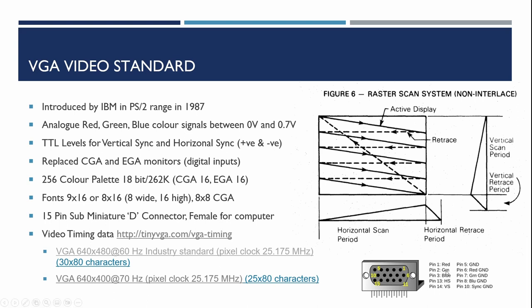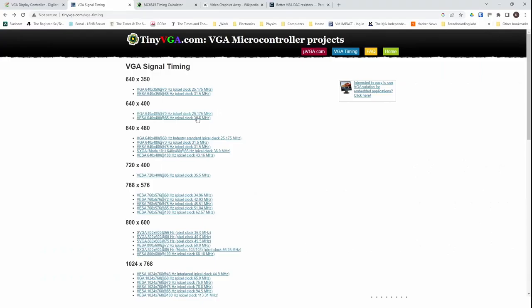The main signals we're concerned with are red, green, blue, horizontal sync, and vertical sync, plus quite a lot of ground signals. VGA timing is quite complicated, and there's a great site at tinyvga.com which also sells simple VGA cards suitable for microcontroller-type projects. We're going to be looking at the 640×480 resolution with the 25 MHz clock.